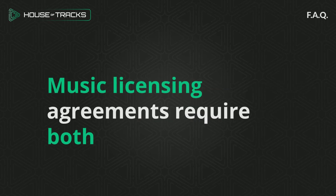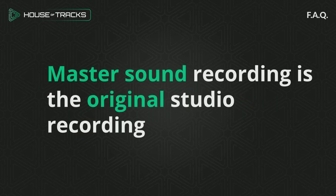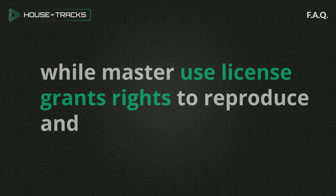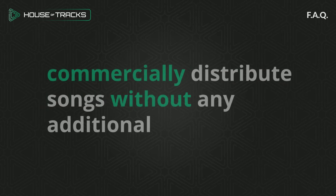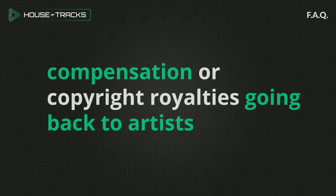Music licensing agreements require both licenses because every recorded song has two copyrights. The master sound recording is the original studio recording, while the master use license grants rights to reproduce and commercially distribute songs without any additional compensation or copyright royalties going back to artists.